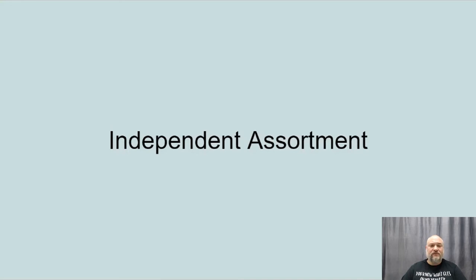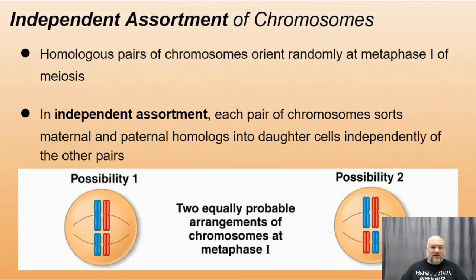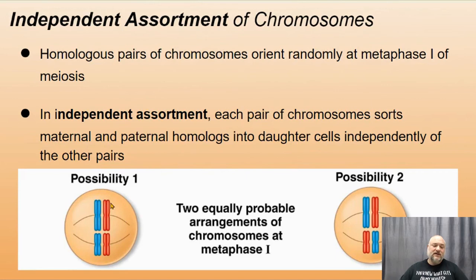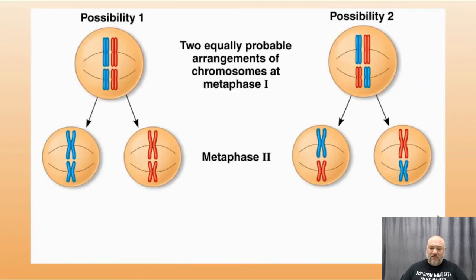Let's look at independent assortment first. Homologous pairs of chromosomes orient randomly at metaphase I of meiosis — each pair sorts maternal and paternal homologues into daughter cells independently of the other pairs. Even if blue is on the left and red is on the right for one pair, another pair can have red on the left and blue on the right. With just a two-chromosome organism we can already have up to four different combinations of chromosome assortment.